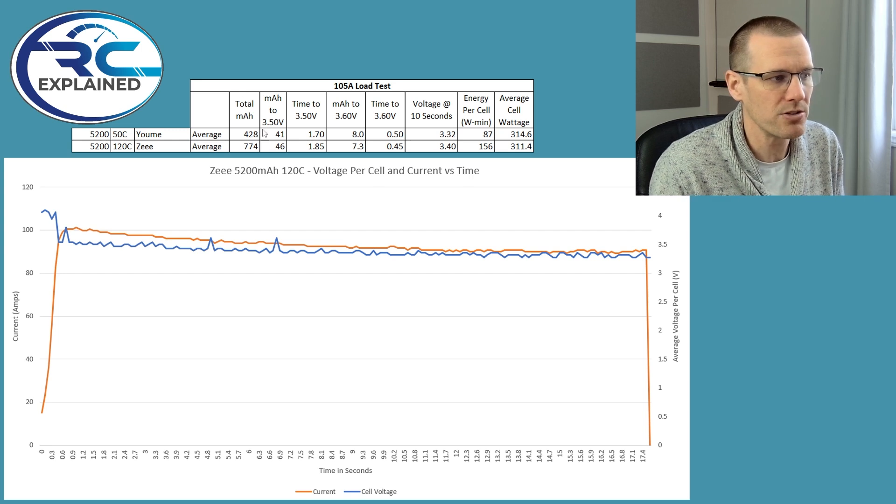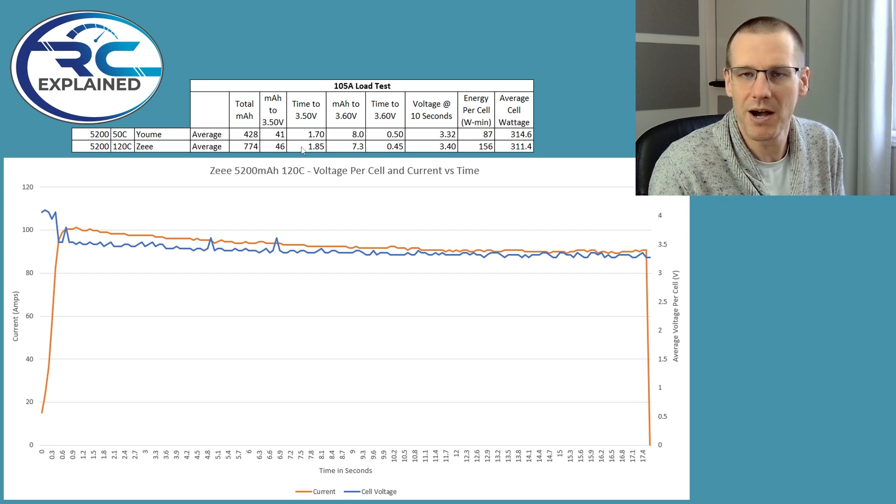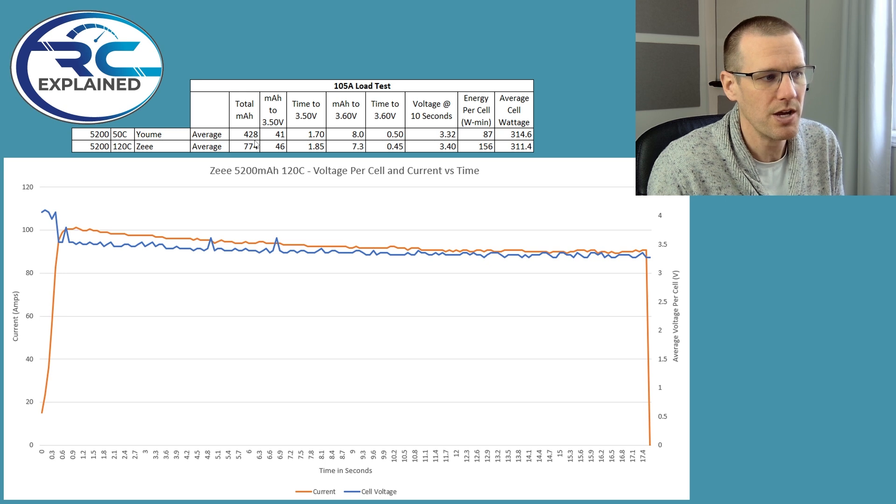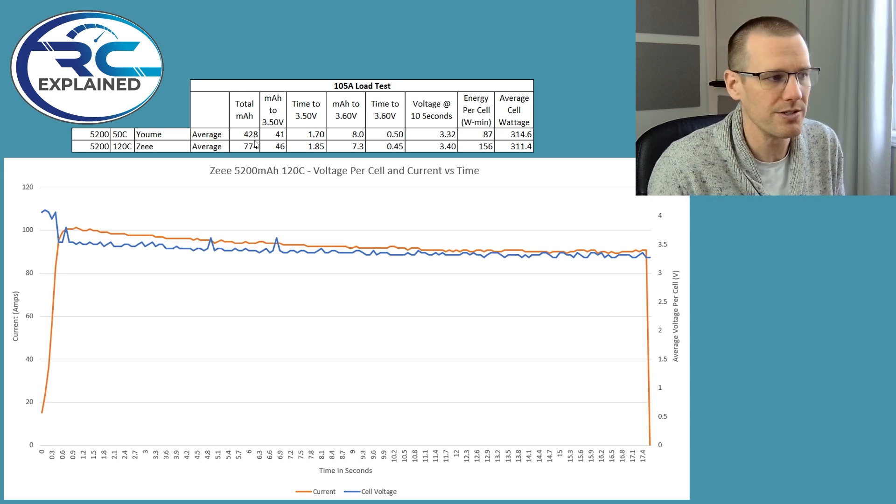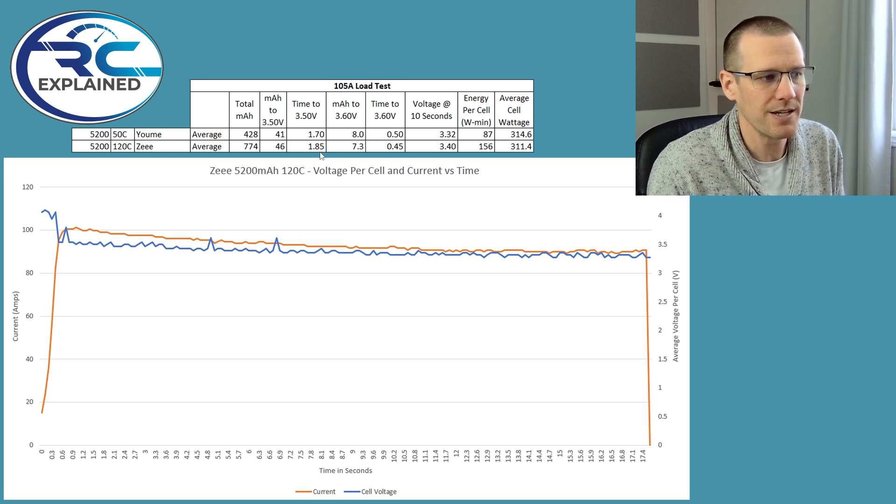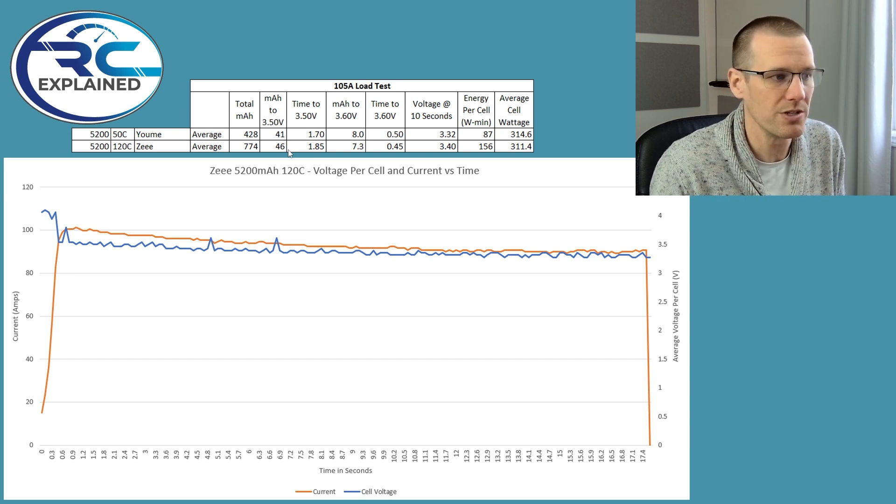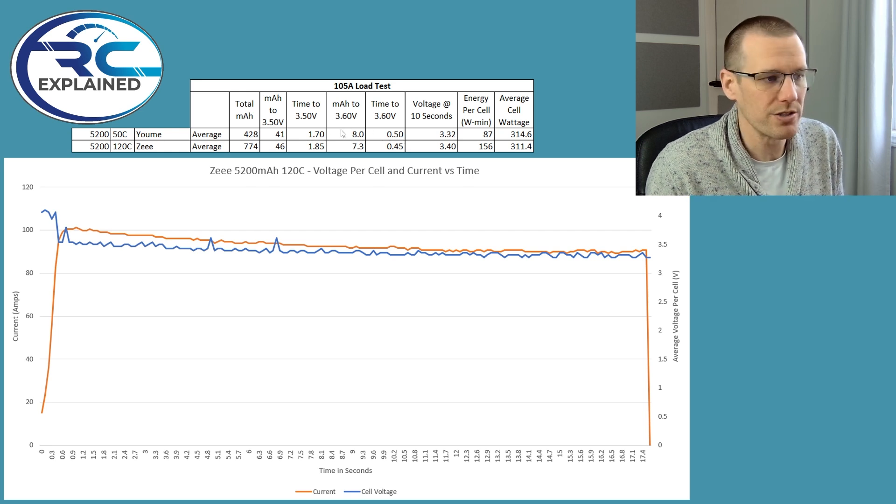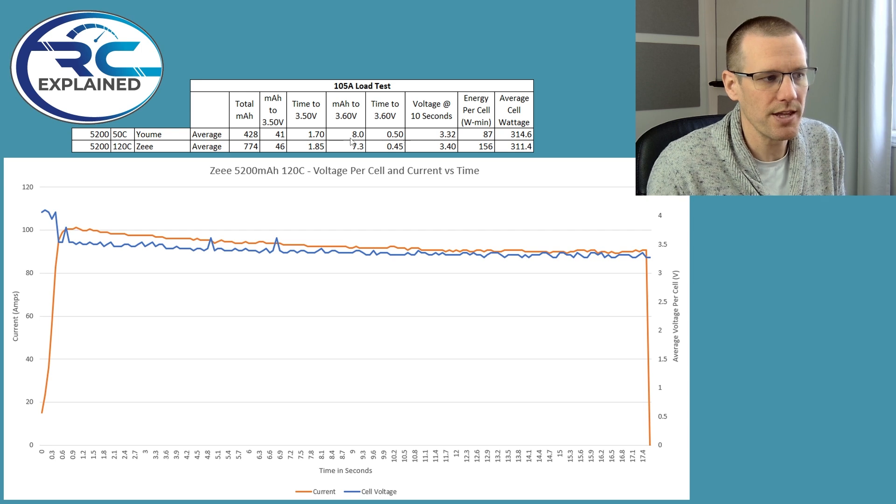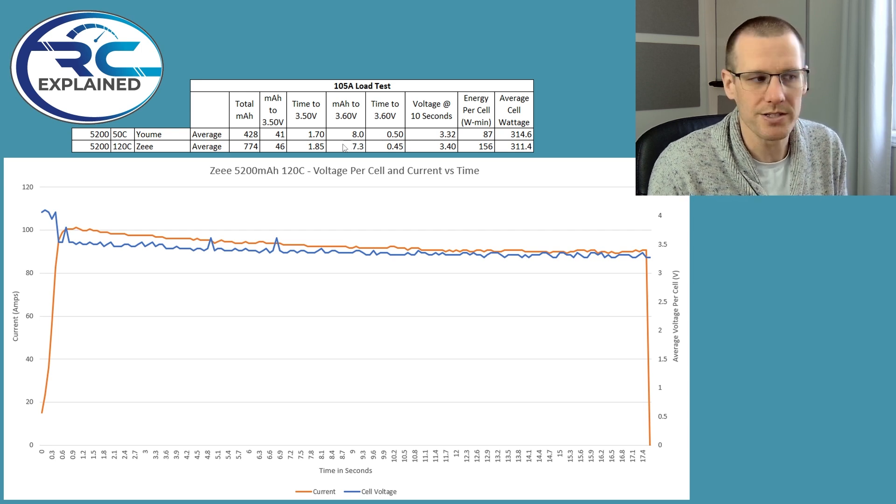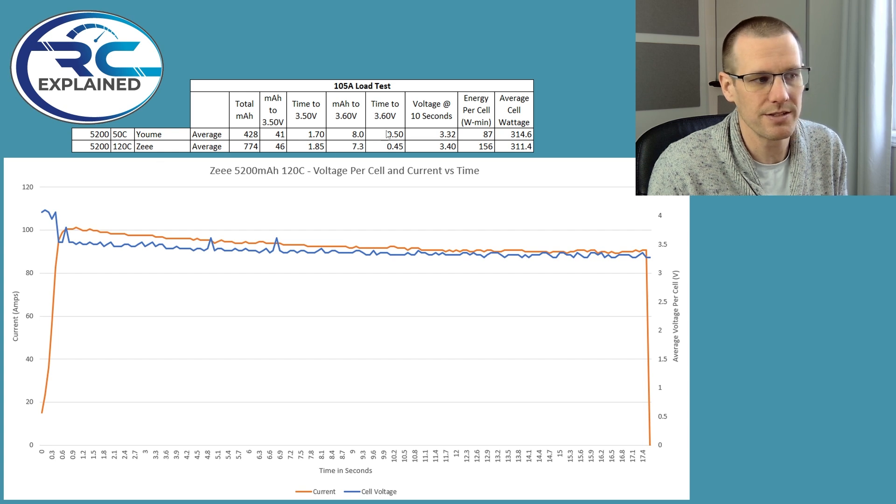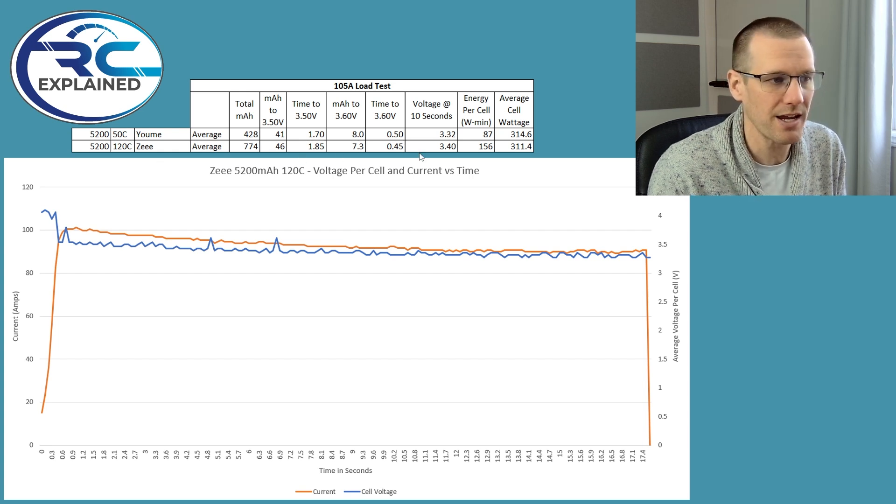Then the milliamp hour to 3.5, again, very minor differences here, even more so that you're getting 41 versus 46 out of the Z. And then the time is 1.7 versus 1.85. Very minute in terms of the differences. When you look at the 3.6, it even gets worse for that specification. Here you got the milliamp hour to 3.6 of 8 for the Yumi and 7.3 on the Z. This is going to give us a time of about half a second.